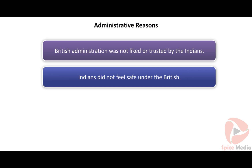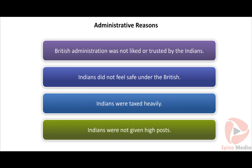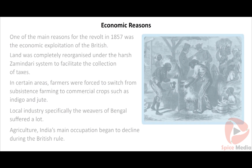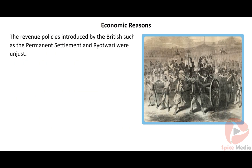Administrative reasons: British administration was not liked or trusted by Indians. They were not in favor of the introduction of English as the official language instead of Persian. Indians did not feel safe under the British, fearing confiscation of property and danger to their lives. Indians were taxed heavily, and landlords and peasants faced great difficulties. Indians were not given high posts in either civilian or military administration, and educated Indians were deprived of good positions.